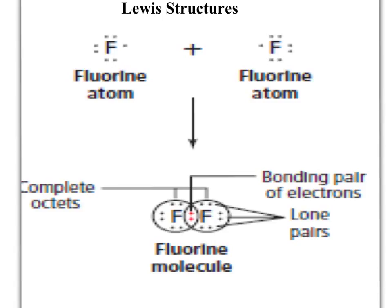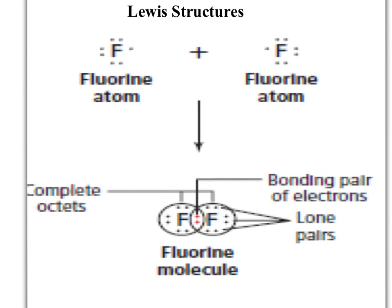Electron transfer isn't going to work between two fluorine atoms. What will work is if the two atoms move close enough together so that their two unpaired electrons — one on each fluorine — now share an orbital or space. Those two dots become a bonding pair, and what holds the atoms together is the positive charge in each nucleus attracting that bonding pair of electrons and physically keeping those atoms close to each other.